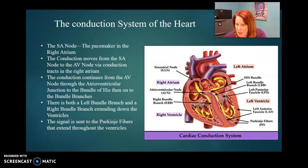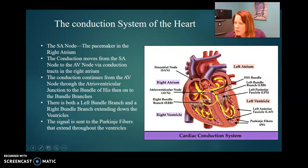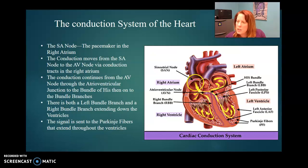The heart has an electrical flow as well, and there are different pressure points of the electrical flow. The SA node, or sinoatrial node, is at the very top of the right atrium. The AV node is right down near the bottom of the right atrium, going into the right ventricle. Then you have the Purkinje fibers and the bundle of His. The flow of current goes from the SA node to the AV node, through the bundle of His, and then out into the heart through the Purkinje fibers.